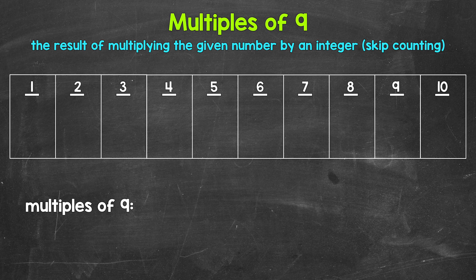So 1 times 9, 2 times 9, 3 times 9, so on and so forth. Another way to think of multiples is to skip count. So all of the numbers something is going to hit when counting up by that number, those are all going to be multiples.